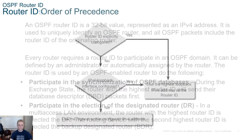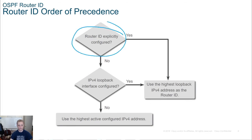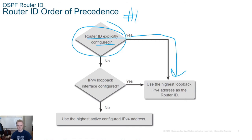Here is a basic flowchart about router ID priorities. Is the router ID explicitly configured? That's number one. If yes, then use the router ID that is explicitly configured.